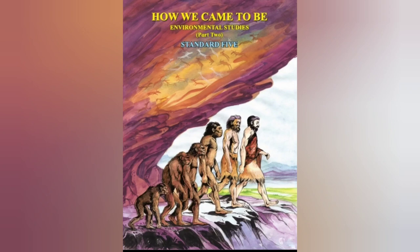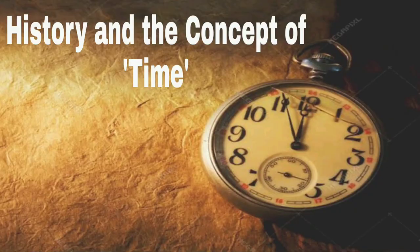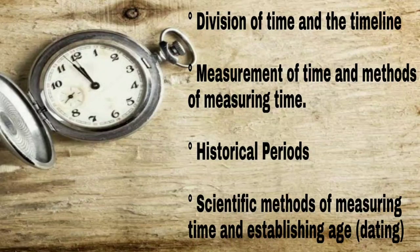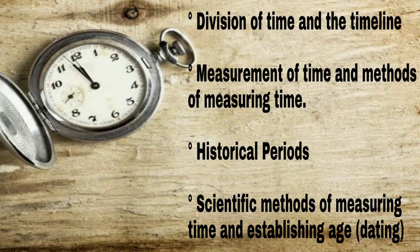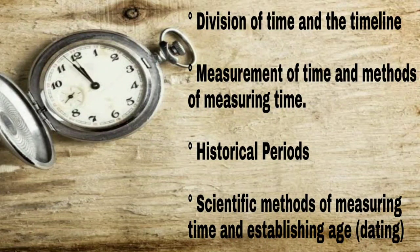Hello everyone. My name is Drupthi and today we are going to see a new lesson from Class 5th Environmental Studies Part 2. The name of the lesson is History and the Concept of Time. In this lesson we are going to see Division of Time and the Timeline, Measurement of Time and the Methods of Measuring Time, Historical Periods, Scientific Methods of Measuring Time and Establishing Age, and Dating. So let's get started.